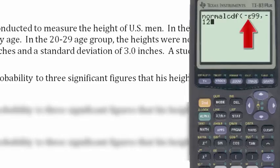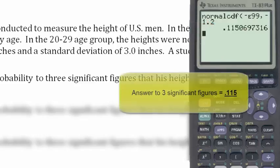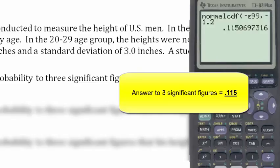Now enter negative double E, engineering exponent 99, comma, negative 1.2, and press enter. Here we get an answer, which is a much longer decimal, which we then use in a similar way to get the answer 0.115.